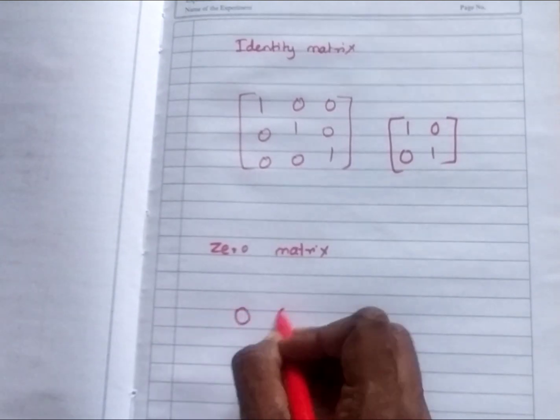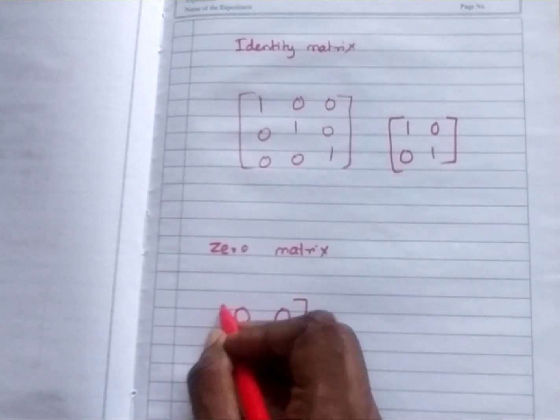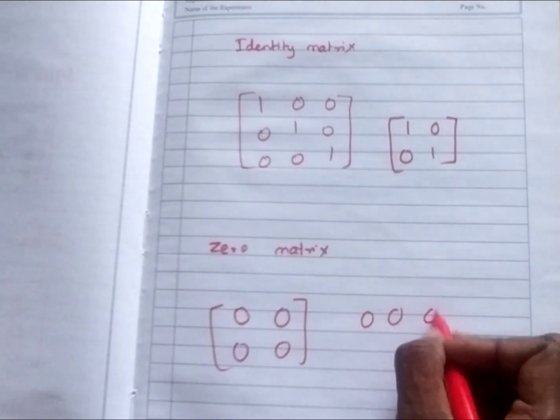0 matrix. Very simple. All will be completely 0. It is called as 0 matrix.